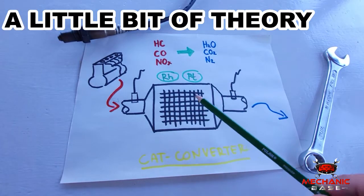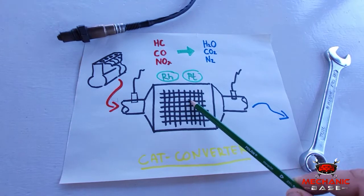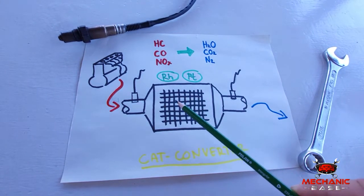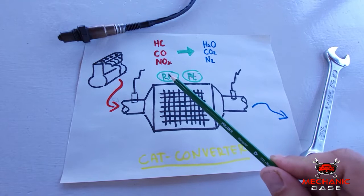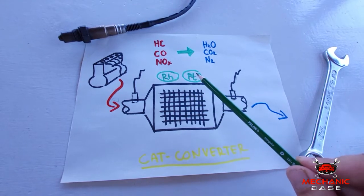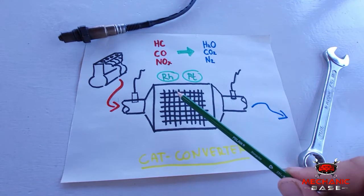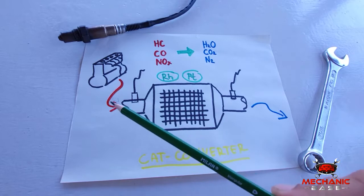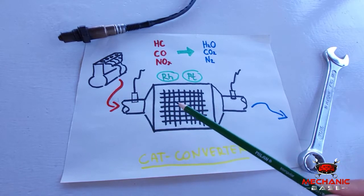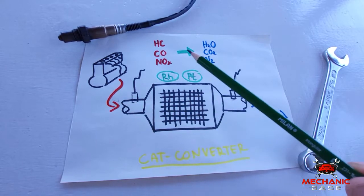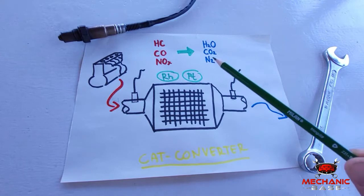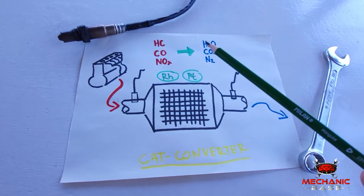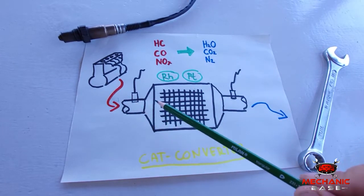The catalytic converter is in essence a canister with a dense honeycomb-like mesh inside. This mesh is covered with a thin layer of precious materials such as rhodium and platinum, called catalyst. As raw exhaust gases coming from the engine pass through the honeycomb, they react with the catalyst and become less harmful — hence the name catalytic converter.